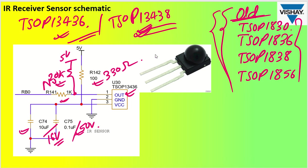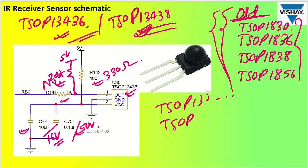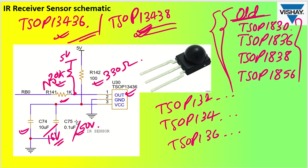To summarize the series options: TSOP 132, TSOP 134, and TSOP 136 are all available, but our suggestion is TSOP 13438 and TSOP 13436. Hope you have understood completely about the circuit implementation. If you have any questions regarding the implementation, please let us know in the comments.